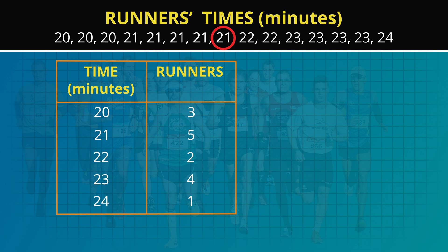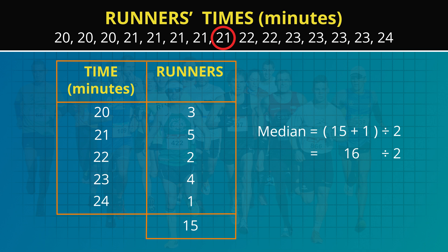Let's figure out a rule to find the median. There are 15 race times and the middle time is the eighth time. 15 plus 1 is 16, and 16 divided by 2 gives us the eighth time, which is 21 minutes.